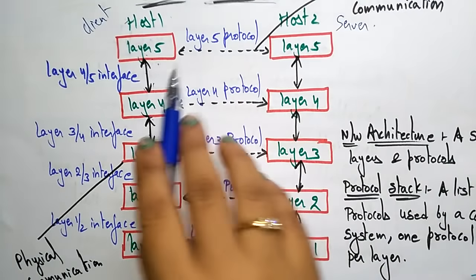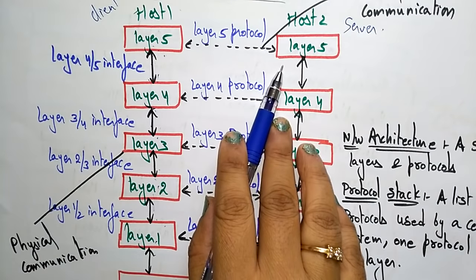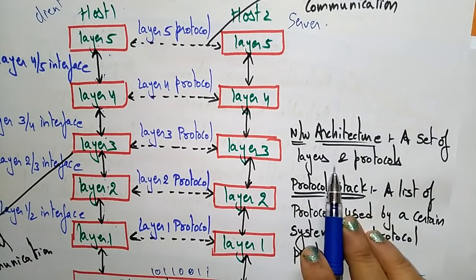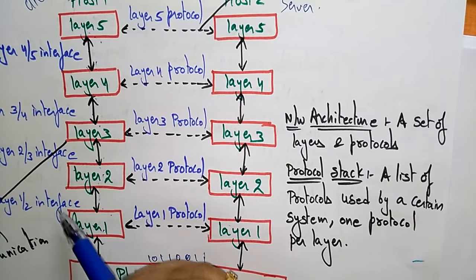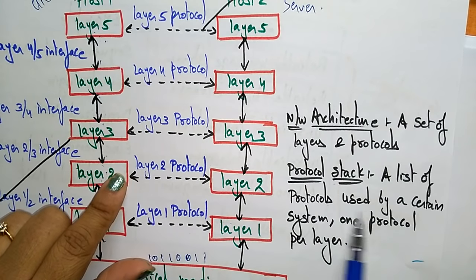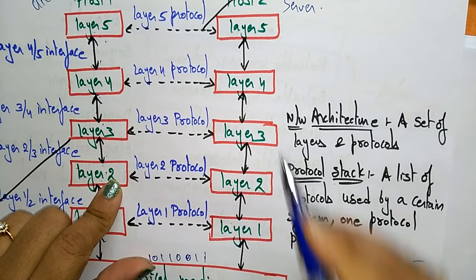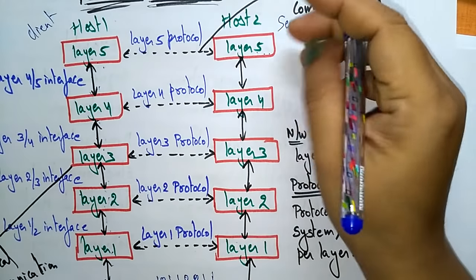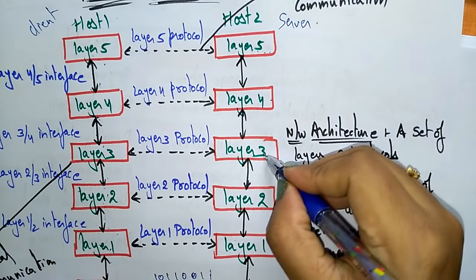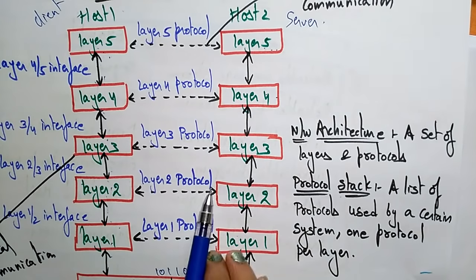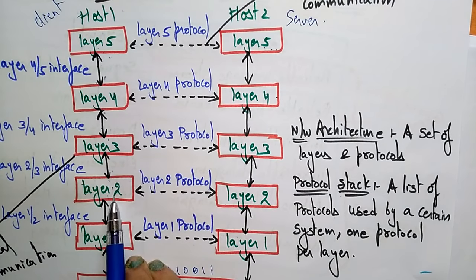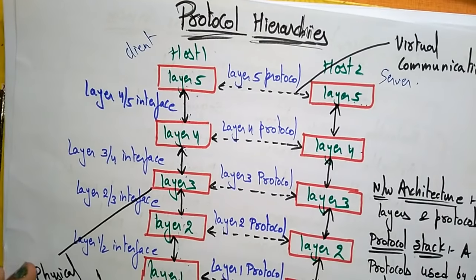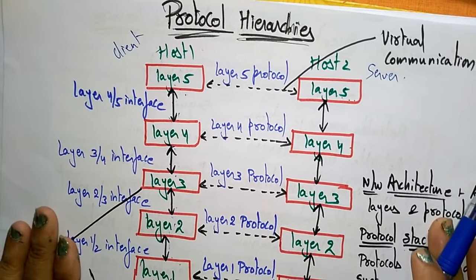The data passes physically from host one to host two and vice versa, while the communication between each layer is a protocol, which is a virtual communication. The network architecture is a set of layers and protocols, and the protocol stack is a list of protocols used by a certain system — one protocol per layer. Each layer follows only one protocol, and that is communicated with the other host in the network. This concludes the topic of protocol hierarchy in network software.